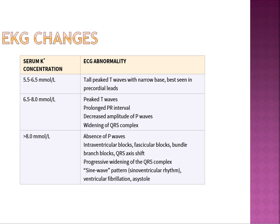EKG changes with hyperkalemia — a common board question. Imagine the EKG with its P wave, QRS complex, and T wave as a thread; hold the ends and stretch it — that's the EKG change of hyperkalemia. First you see tall, peaked T waves — so sharp that the classic description is 'if you want to sit on it, you cannot.' Then prolongation of the PR interval, decreased P wave amplitude leading to sinus arrest, widening of the QRS complex, intraventricular fascicular and bundle branch blocks, and finally a sine wave pattern.